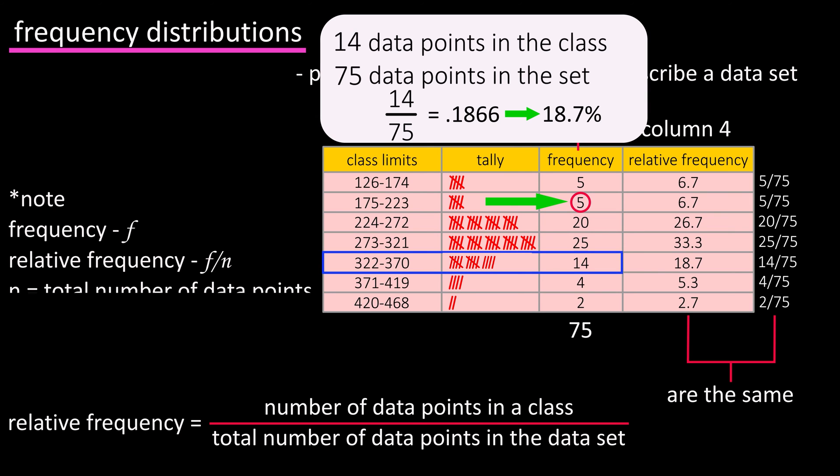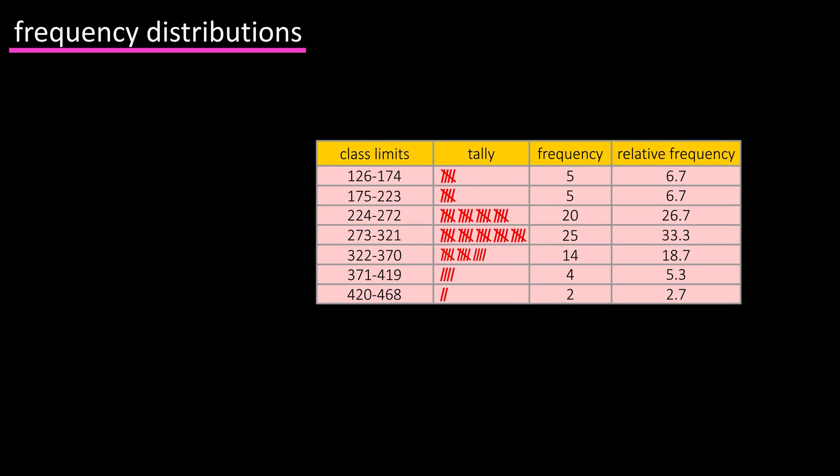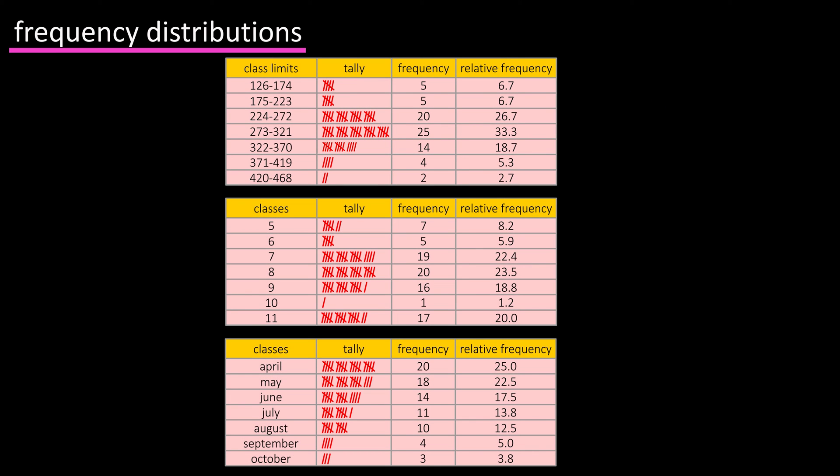There are three main types of frequency distributions that are often used. A grouped frequency distribution, which is the one we have been looking at, as it has data grouped within classes or intervals.